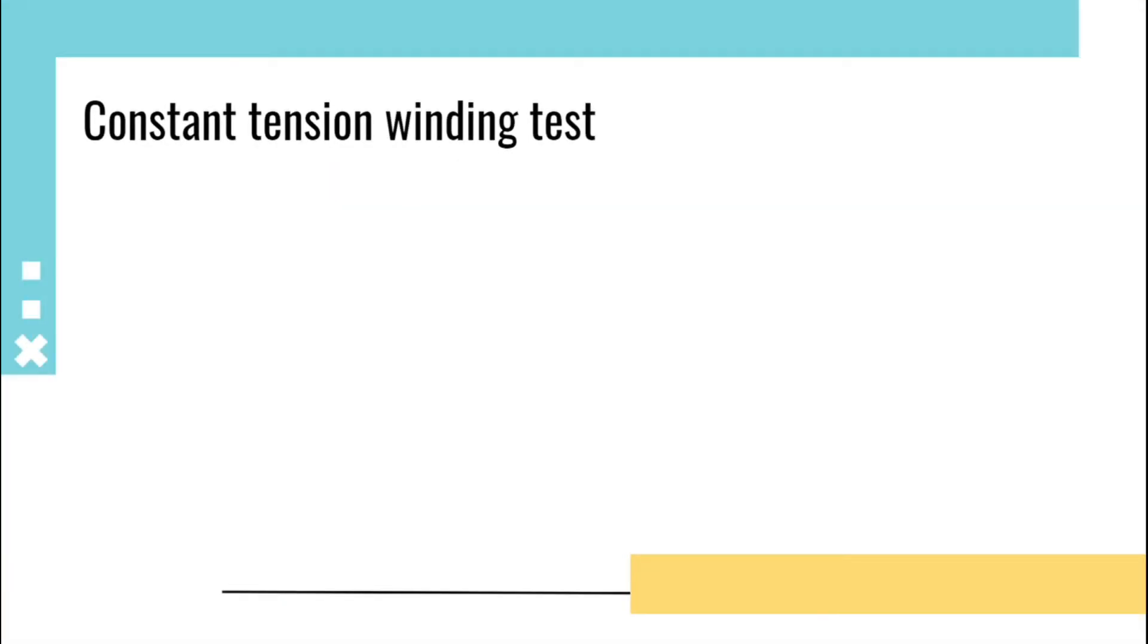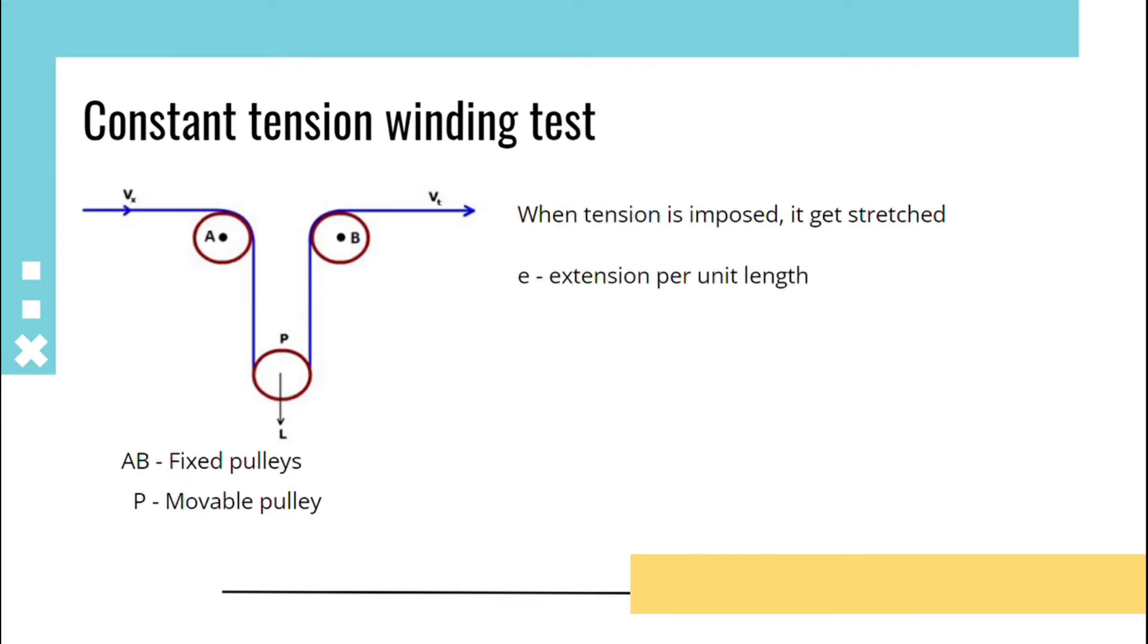Constant tension winding test. Consider AB be the fixed pulleys and P be the movable pulley. When tension is imposed, the material gets stretched. Let e be the extension per unit length. Then the output tension will be equals to input tension into one plus extension per unit length.